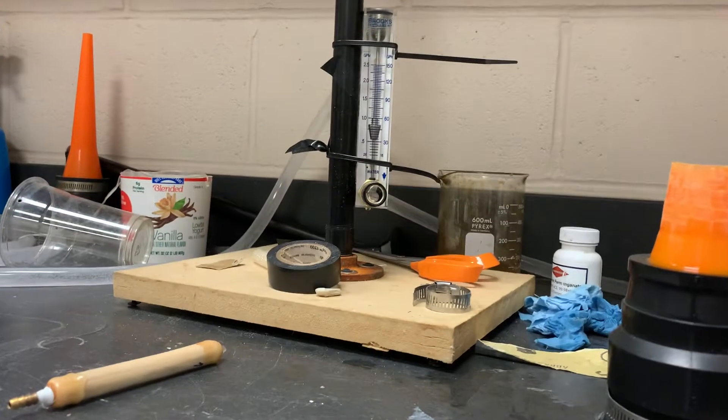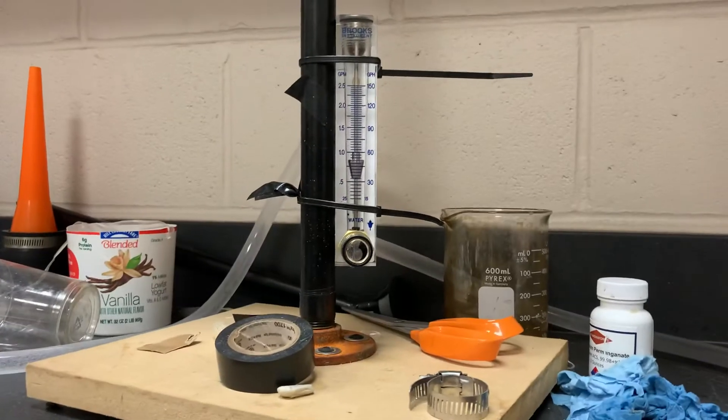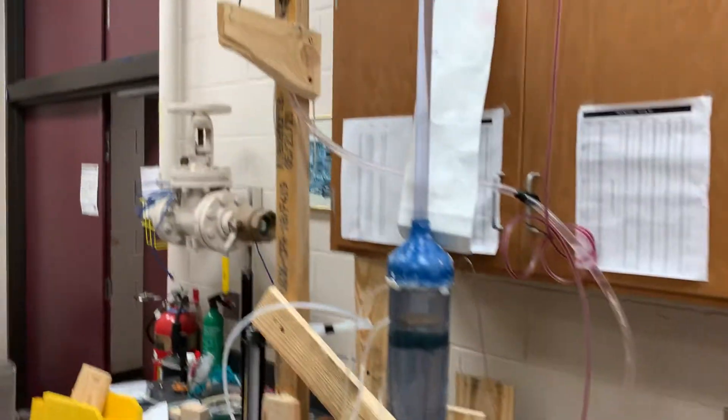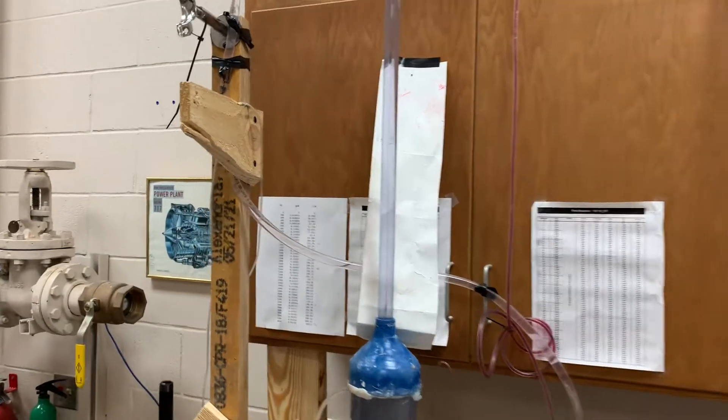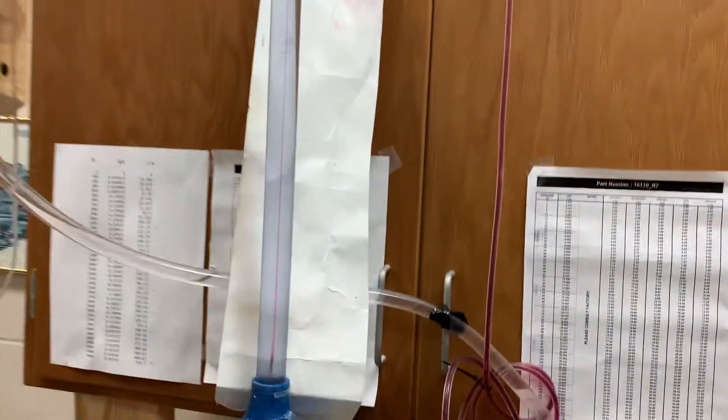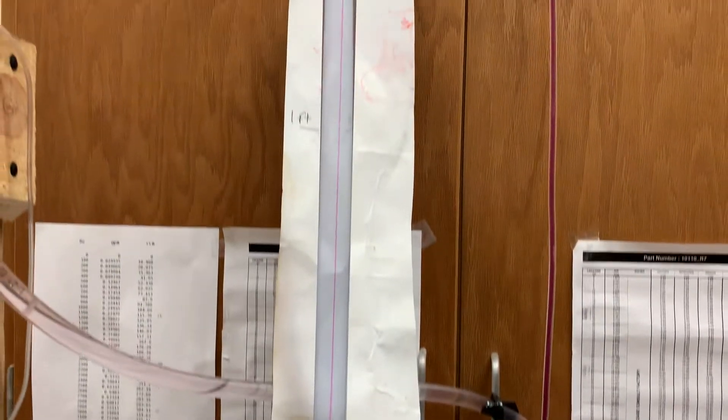We're running at 0.56, roughly 0.55 gallons per minute for a really nice laminar stream.